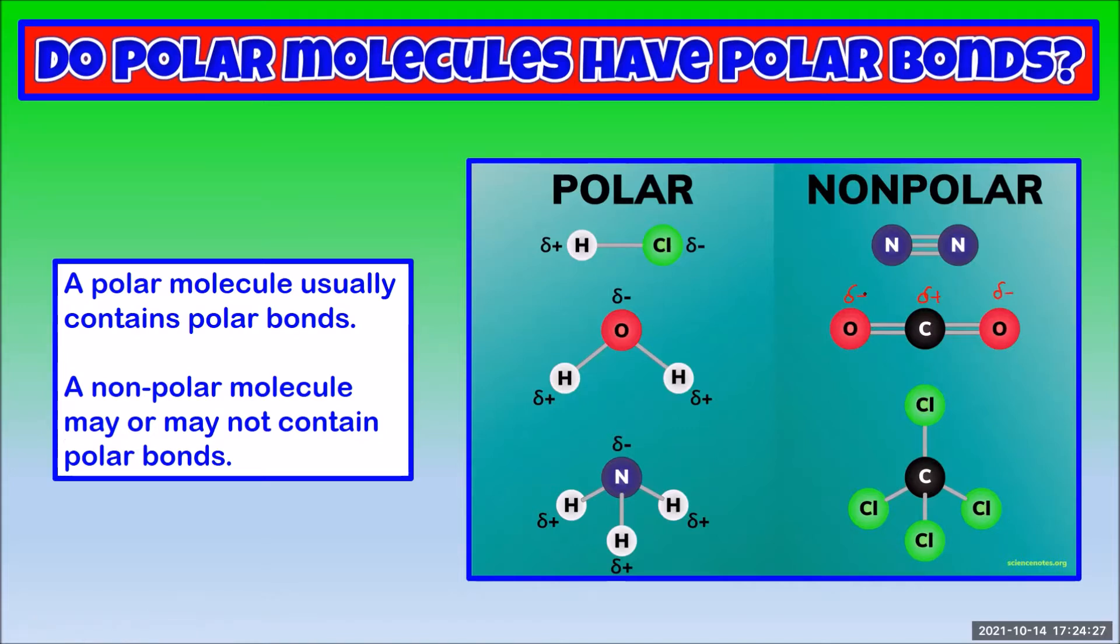In carbon tetrachloride, the electronegativity of chlorine is 3.0 and carbon is 2.5. So these are also polar bonds.